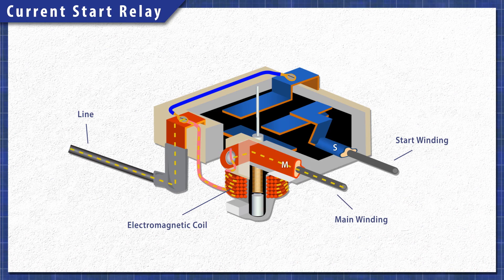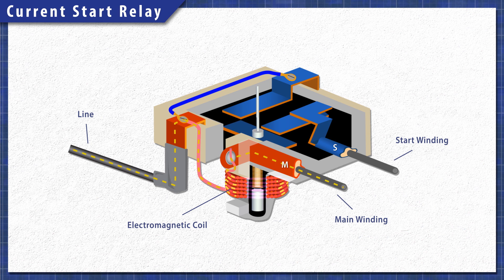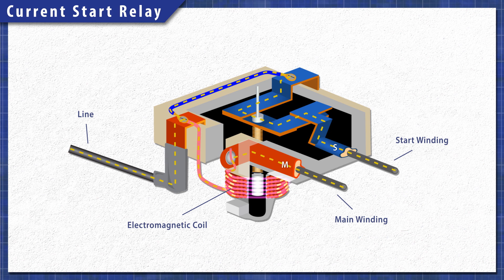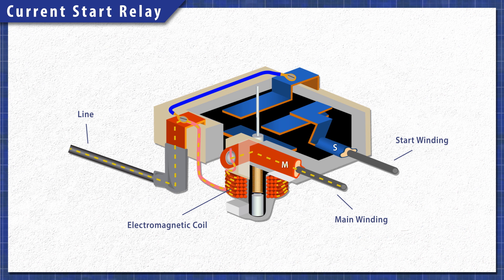A current start relay works differently. When current flows through the coil, the magnetic field pulls a plunger and closes the circuit. The current drops shortly after startup, which releases the plunger, and disconnects the start winding.